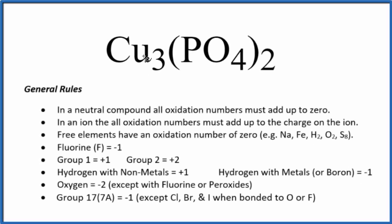To find the oxidation numbers for the copper here in copper 2-phosphate, we'll use these rules. Since there's no negative or positive after the Cu3(PO4)2, it's a neutral compound, and all of its oxidation numbers on each of the elements will all add up to zero.